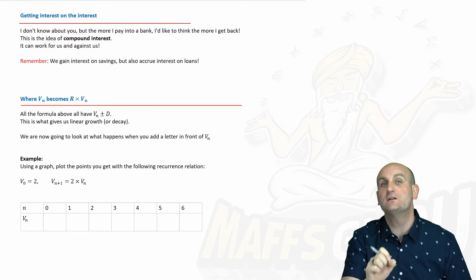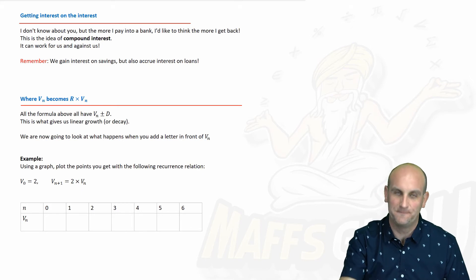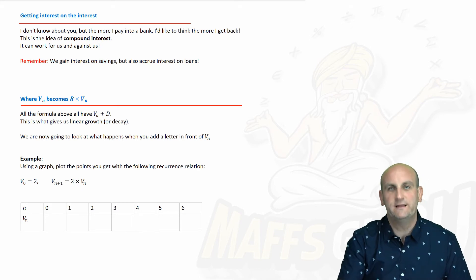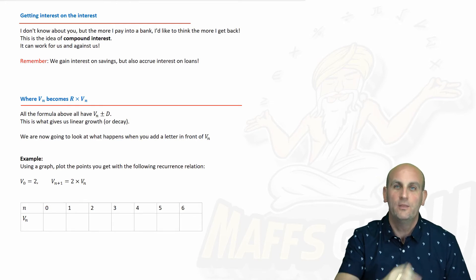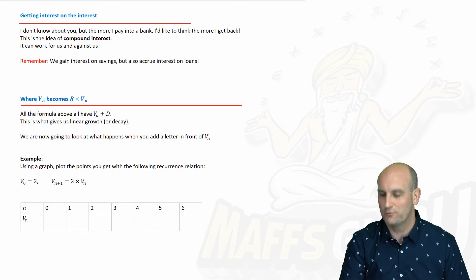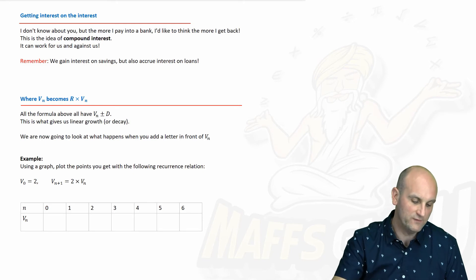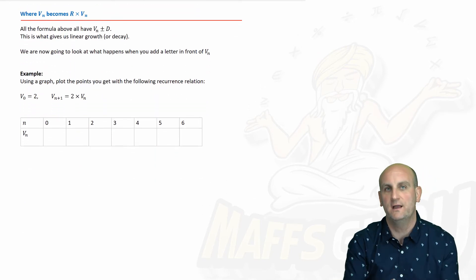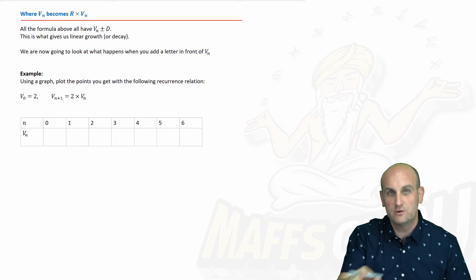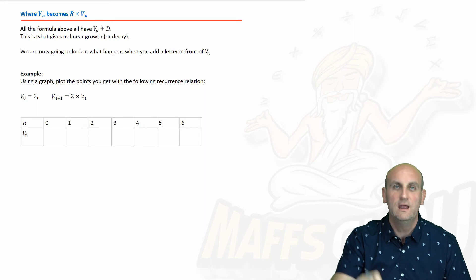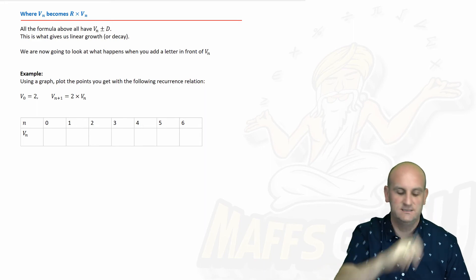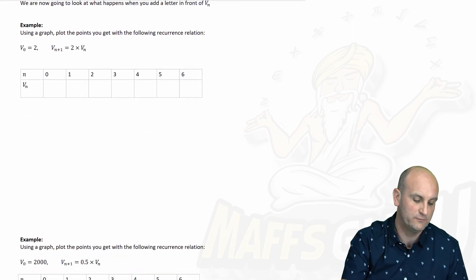We love compound interest if we're paying money into the bank. Unfortunately, banks also like to charge compound interest on mortgages and loans — so the longer you have the loan, the more and more they charge you. More on that in another video. So we need to now start to model not things getting bigger in a linear way, but what we call geometric growth. Geometric growth is when things actually start to curve, and I've got a great example for you here.